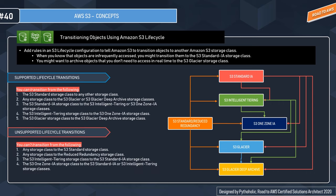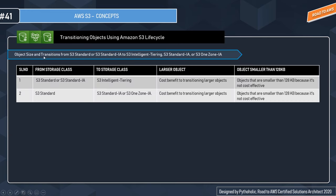What you cannot do: you cannot transition from any storage class back to S3 Standard or Reduced Redundancy — no arrows in the diagram point back to S3 Standard. You cannot transition from S3 Intelligent Tiering to S3 Standard IA. You cannot transition from S3 One Zone IA to S3 Standard IA or S3 Intelligent Tiering. Transitions are one-directional — there is no bi-directional transitioning back to S3 Standard.